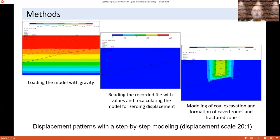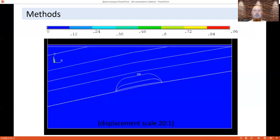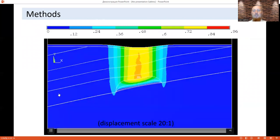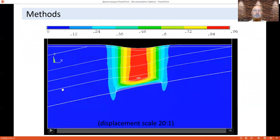To simulate the behavior of rock in the caved zone and fracture zone, the correction of their properties was used, taking into account the fracturing. For this, the Hoek-Brown criterion was used.